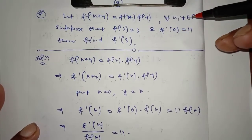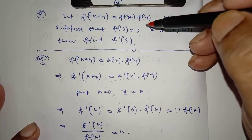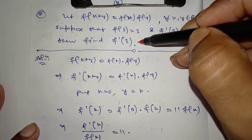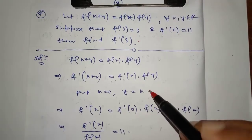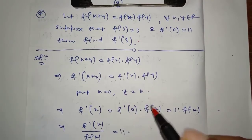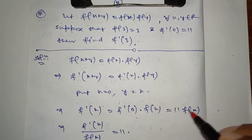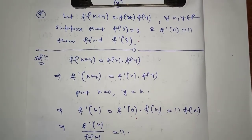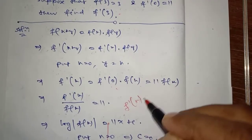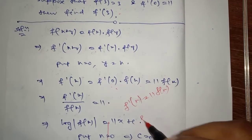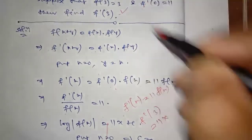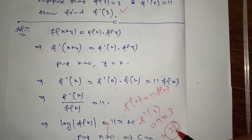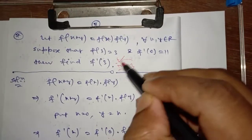Question 7: If f(x+y) = f(x)·f(y) for every x, y belongs to R, such that f(3) = 3 and f'(0) = 11, then find f'(3). Same — differentiate with respect to x, y is constant. So f'(x) = f'(0)·f(x) = 11·f(x). No need to integrate further. Put x = 3: f'(3) = 11·f(3) = 11·3 = 33.